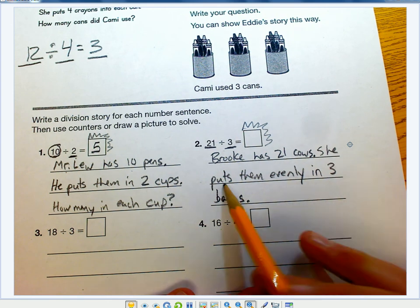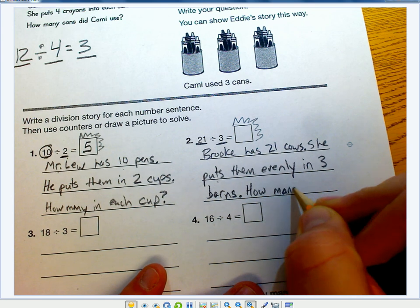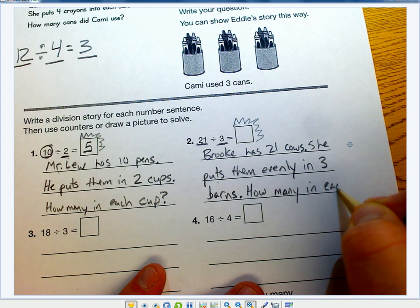Brooke has 21 cows. She puts them evenly in 3 barns. How many in each barn?